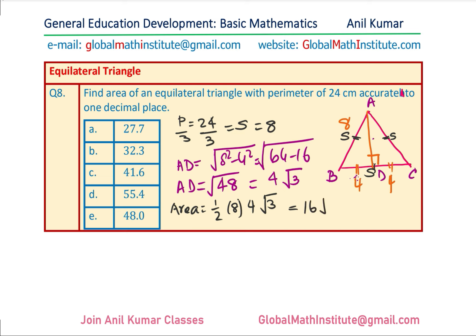Since we need one decimal place, use a calculator to multiply 16 by √3, which gives 27.7. Option A is the right answer. That is a very interesting question — I hope that really helps.